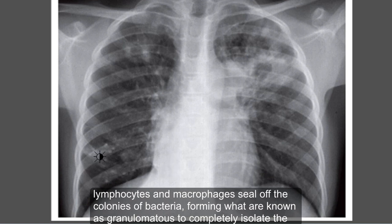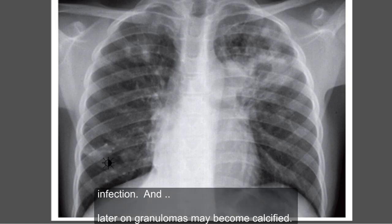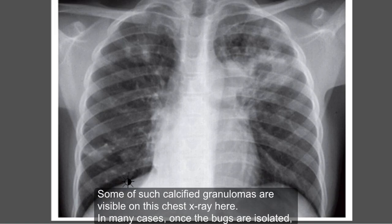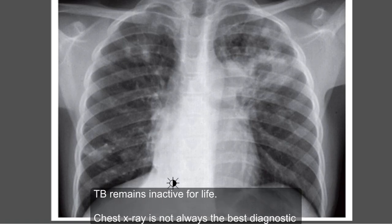Some of the neutrophils, lymphocytes, and macrophages seal off the colony of bacteria, forming what are known as granulomas, to completely isolate the infection. Later on, granulomas may become calcified, and some of these calcified granulomas are visible on this X-ray. In many cases, once the bugs are isolated, TB remains inactive for life.